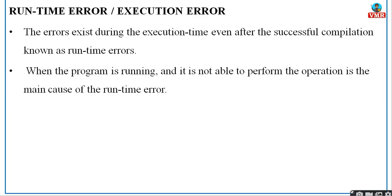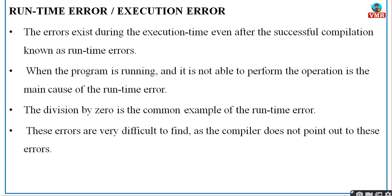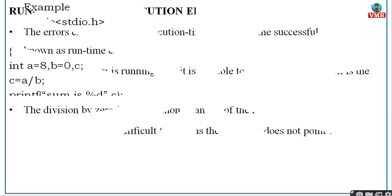If your compilation is well and good but when you try to run you don't get the program to execute, then you can conclude that you have some runtime error. Division by zero is a common example of a runtime error. These errors are very difficult to find as the compiler doesn't point out those errors — runtime errors cannot be found by your compiler. Until and unless you run the code, you will not be able to find out that some error is there in your program.